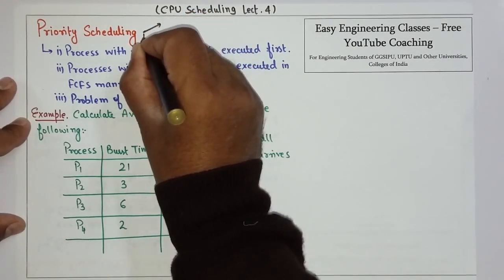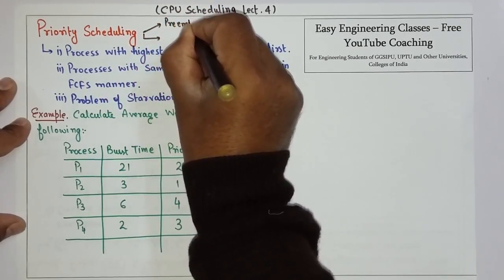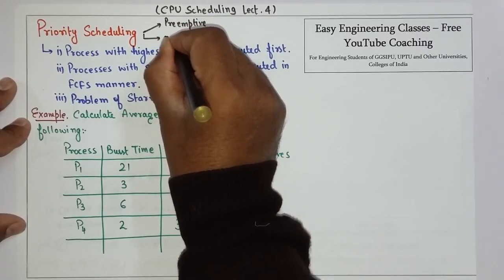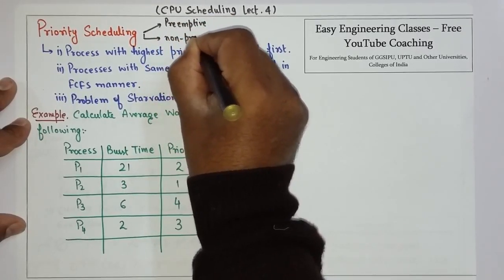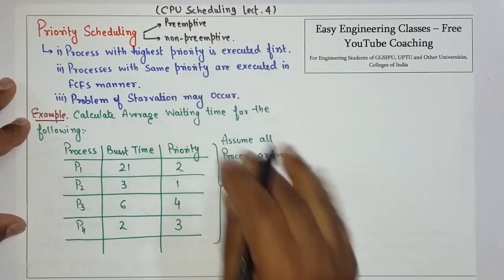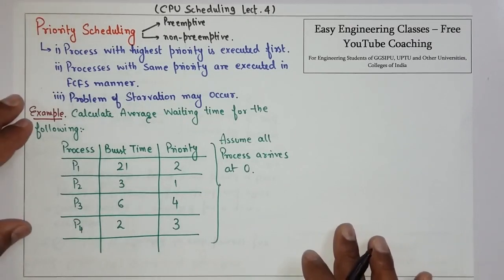Priority scheduling can be of two types: one is preemptive and another is non-preemptive. In the preemptive type, if there is a process that is running and another process comes with a higher priority, then the process with the lowest priority will be preempted.